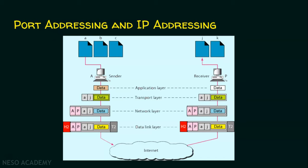We have already seen this example in the previous lecture. Suppose this is the sender computer and this is the receiver computer. Let us assume that A is the IP address of the sender computer and P is the IP address of the receiver computer. In the sender computer there are three processes running: one, two, and three. This process is assigned port number A, this process port number B, and this process port number C.